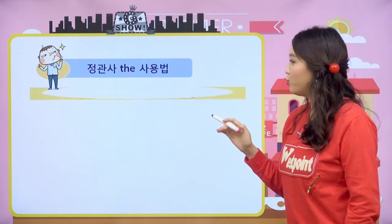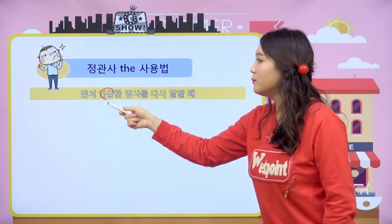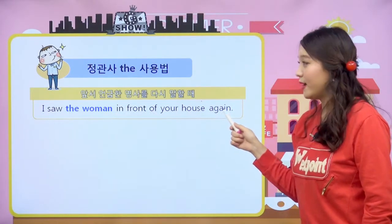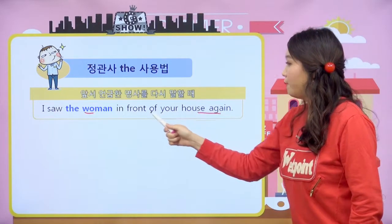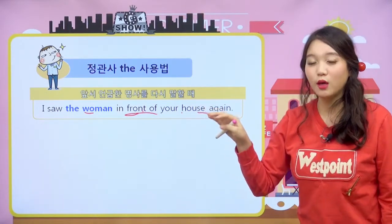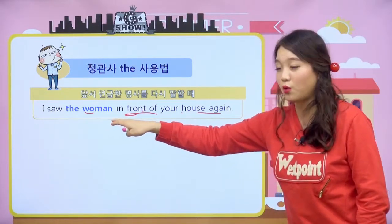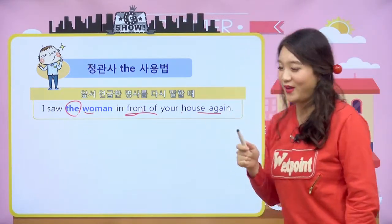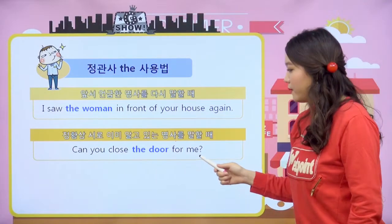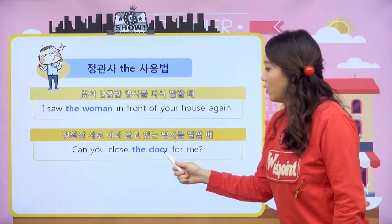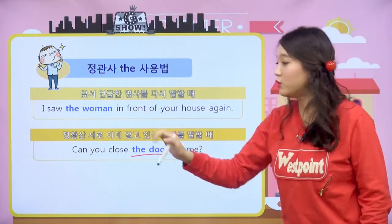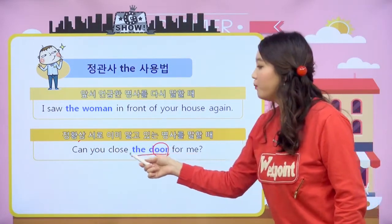정관사는 어느 때 사용하는지 구체적으로 보도록 하겠습니다. 첫 번째, 앞서 언급한 명사를 다시 말할 때: I saw the woman in front of your house again — 나는 그 여자를 너네 집 앞에서 또 봤어. 그때는 어떤 여자인지 몰라서 a woman이었는데, 이번에는 같은 여자이기 때문에 the woman이 됩니다. 두 번째, 정황상 서로 이미 알고 있는 명사를 말할 때: Can you close the door for me? — 저 문 좀 닫아줄 수 있어요?